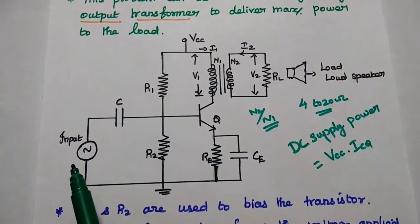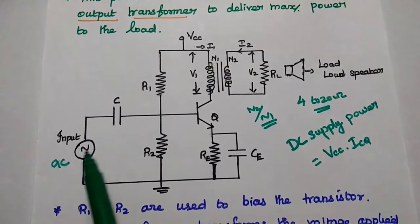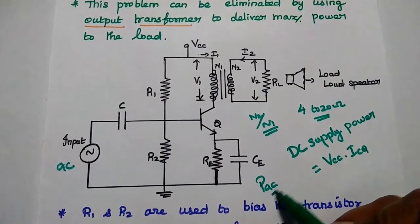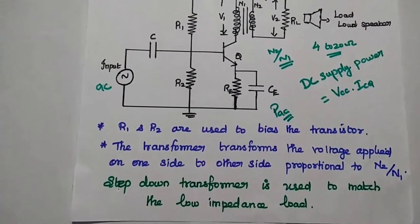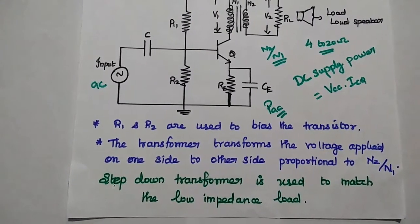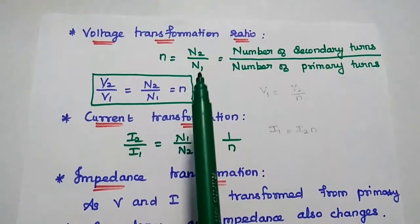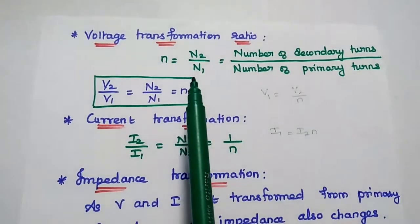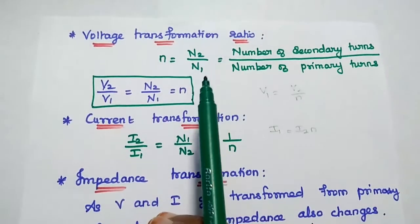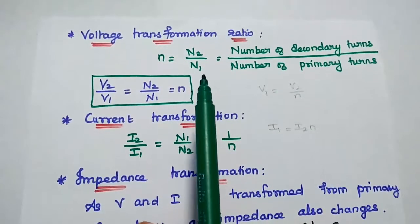Next, whenever we are going to give the AC input signal, we are going to use a step down transformer to match the low impedance load with the collector circuit. In transformer coupled Class A amplifier, we have to consider three transformation ratios. The first one is the voltage transformation ratio. It is the ratio of the number of secondary turns to the number of primary turns.